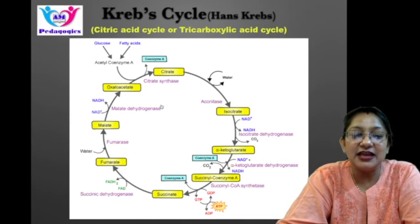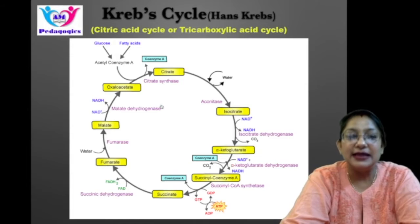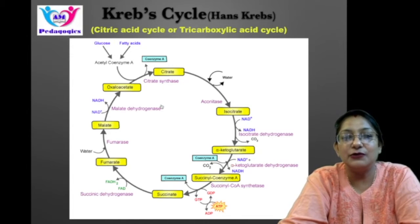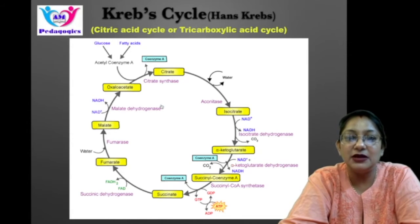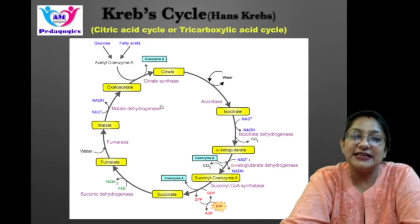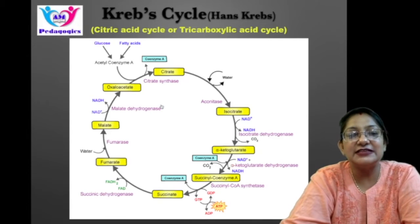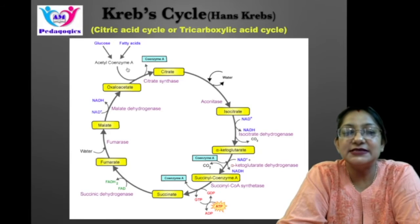There are 4 stages of cellular respiration. The first stage is glycolysis — partial oxidation of a glucose molecule to form 2 molecules of pyruvate. This process takes place in the cytosol. The second stage is the formation of acetyl coenzyme A, where pyruvate is converted further.